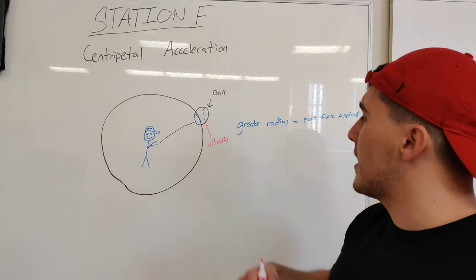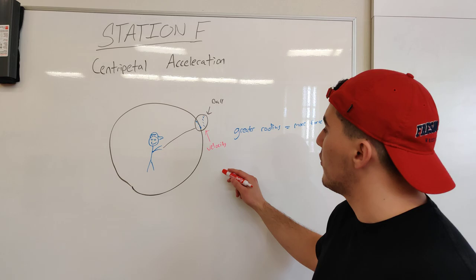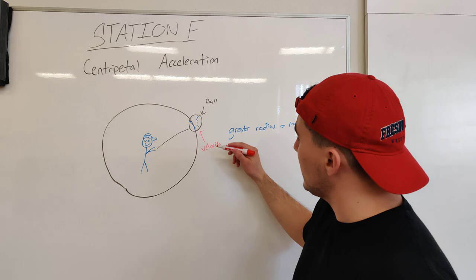So that answers some of the questions in your stations. But the last one, if we were to let go of the ball, we know that the velocity is actually perpendicular to the radius.